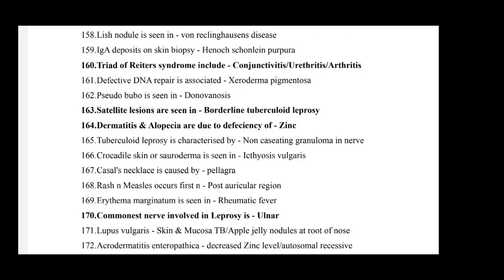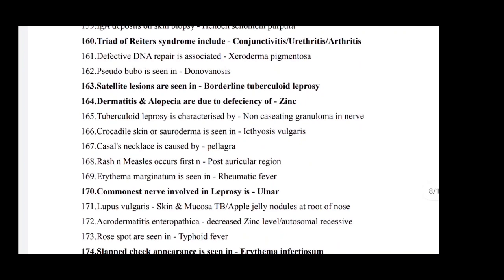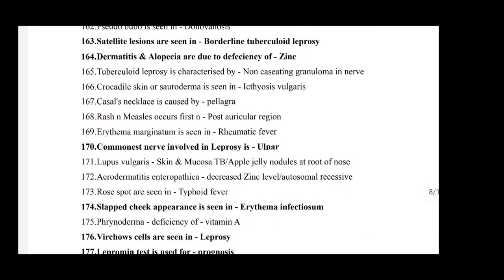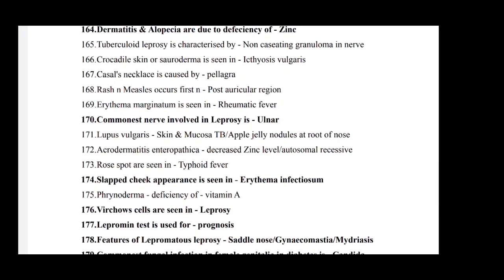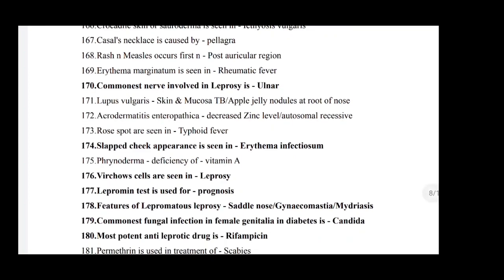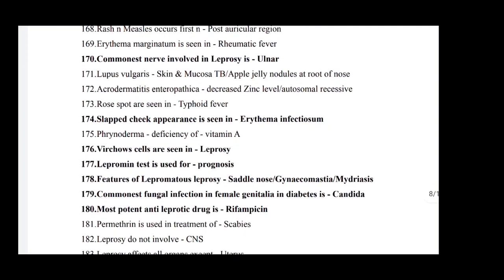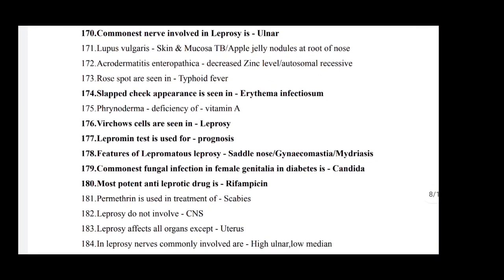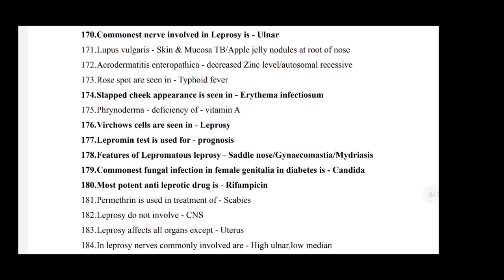Triad of Reiter's syndrome: non-gonococcal conjunctivitis, urethritis, and arthritis. Defective DNA repair is associated with xeroderma pigmentosa. Pseudobuboes are seen in donovanosis. Satellite lesions are seen in borderline tuberculoid leprosy. Dermatitis and alopecia are due to deficiency of zinc. Tuberculoid leprosy is characterized by non-caseating granuloma in nerve. Crocodile skin or xerodermia is seen in ichthyosis. Pellagra is caused by niacin deficiency. Rash and muscle occur in post-auricular region. Erythema marginatum is seen in rheumatic fever. Commonest nerve involved in leprosy is ulnar.